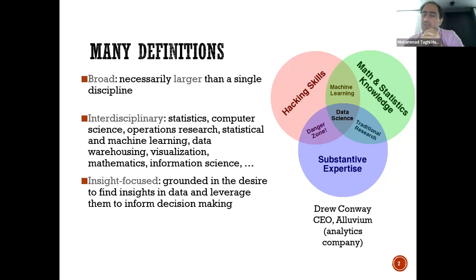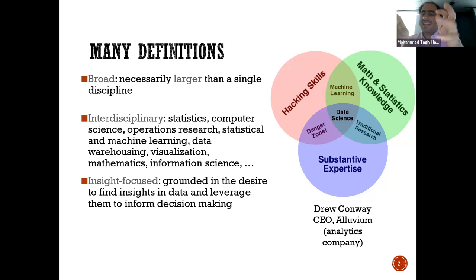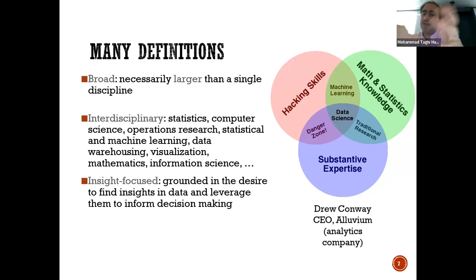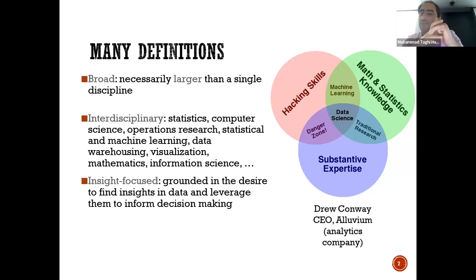Drew Conway's view is that data science is the intersection of three things: hacking skills, math and statistics knowledge, and substantive expertise — like knowing chemistry, biology, etc. If you have hacking skills and math, that's machine learning. If you have substantive expertise plus math, that's traditional research. But if you have hacking skills and substantive expertise without math and statistics, that's the danger zone — because you can do something that is really not very well-grounded.